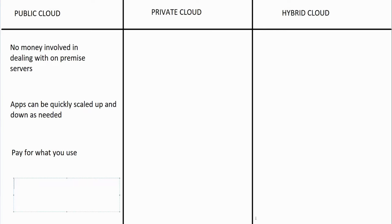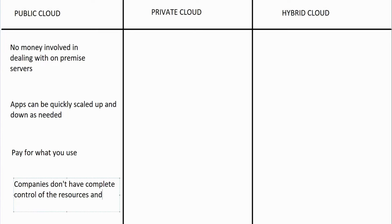There is one downside to a public cloud: companies don't have complete control of the resources and security. We don't have complete control over all the hardware and everything that's managed there — the cloud company does. That's a consideration you can see as a disadvantage.